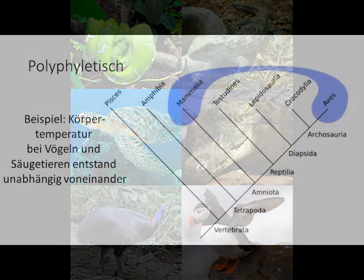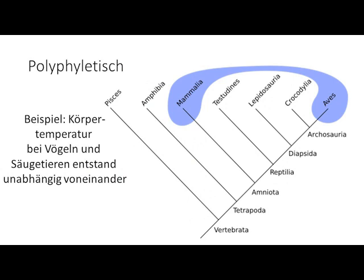Es gibt auch polyphyletische Gruppen — das sind Gruppen, die keine gemeinsame Stammform haben und keine natürliche Gruppe darstellen. Ein Beispiel ist die Warmblütigkeit: Säugetiere und Vögel sind in der Lage, ihre Körpertemperatur unabhängig von der Umgebung konstant zu halten. Dieses Merkmal ist aber das Ergebnis konvergenter Evolution und basiert also nicht auf gemeinsamer Abstammung.